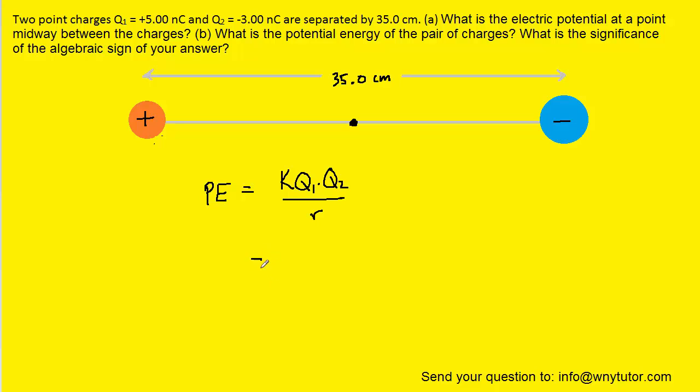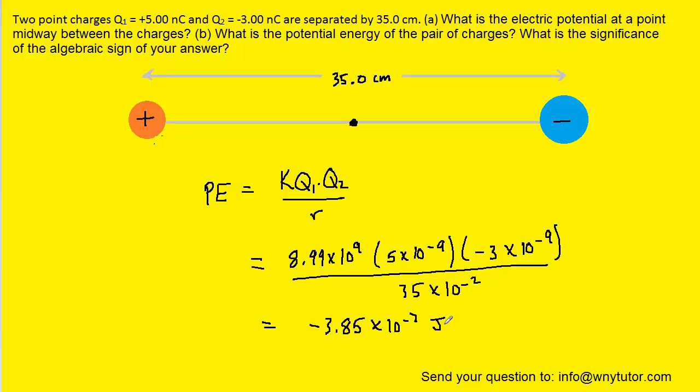Again, we'll convert that into meters. And so we can just plug in K and the two charges and that distance. And when we crunch that down, we should get roughly negative 3.85 times 10 to the minus 7, and then the standard unit of energy is the joule. So this is the correct answer to part B.